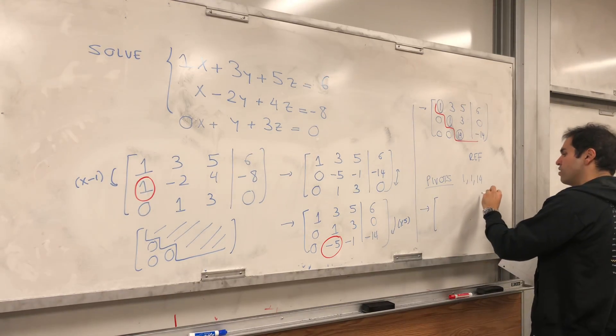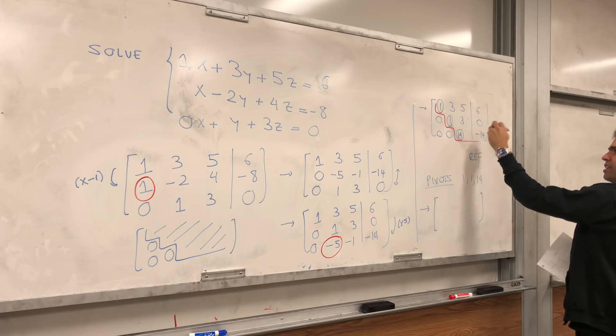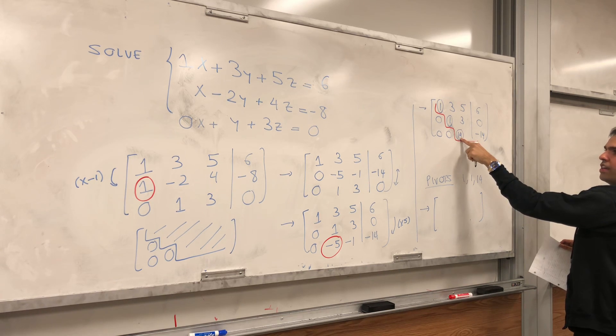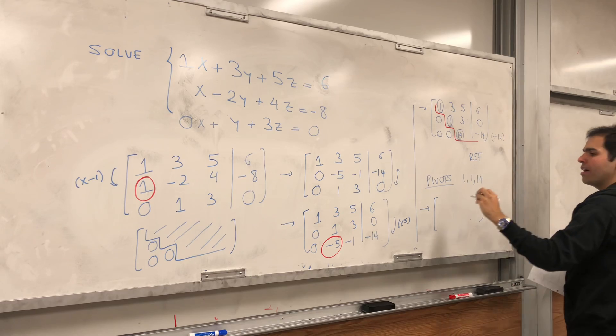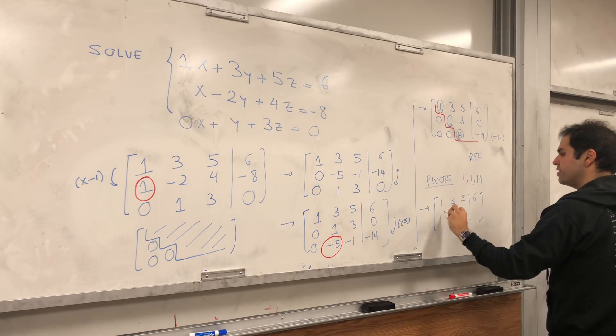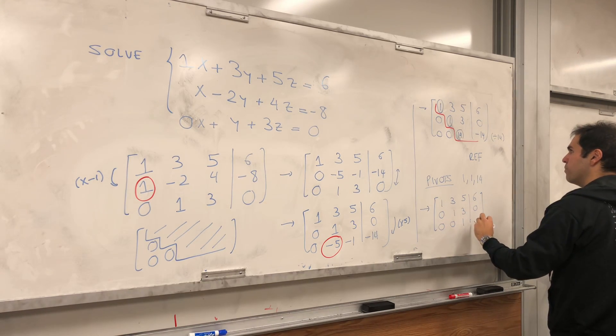So we can get what's called the reduced row echelon form. And the first requirement is that the pivots are 1. So in order to make that pivot 1 here, we can divide this row by 14. So 1, 3, 5, 6. 0, 1, 3, 0. 0, 0, 1, minus 1.